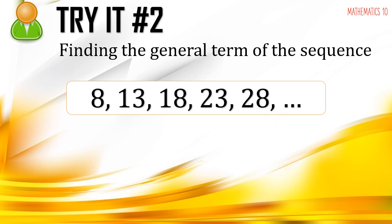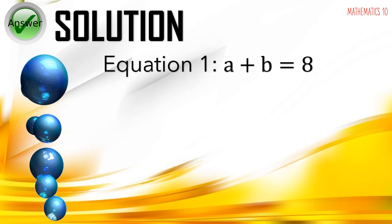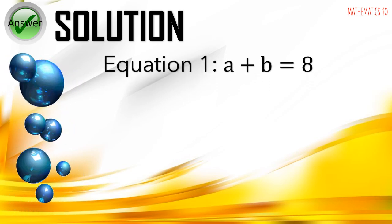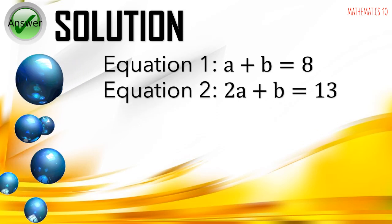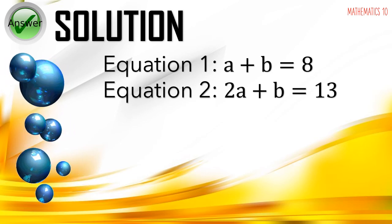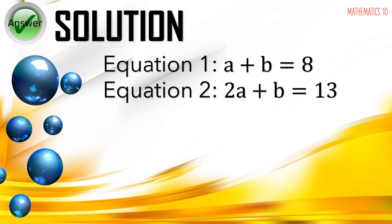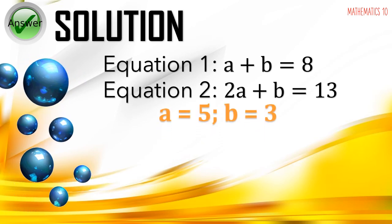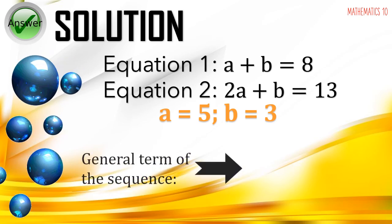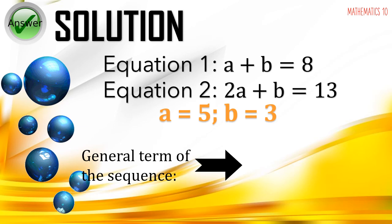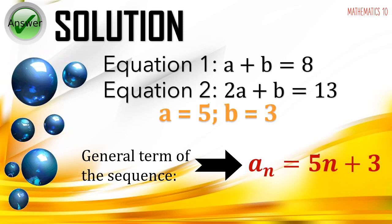Now it's your turn. Find the general term of the sequence 8, 13, 18, 23, 28. Pause the video to answer and resume to check. For the solution: equation 1 is a plus b equals 8, and equation 2 is 2a plus b equals 13. Using elimination, we get a equals 5 and b equals 3. Therefore, the general term is a sub n equals 5n plus 3.